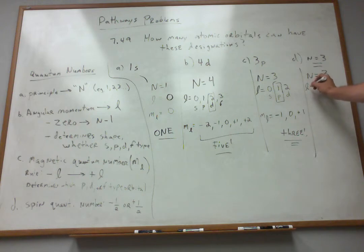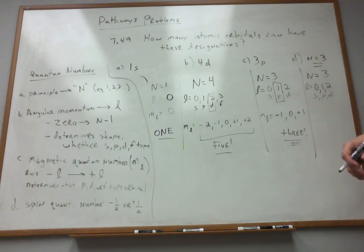So what about l in this case, then? Well, let's see. That could probably take on several different values. Again, the rule is that we start at 0. We go to integer values, like 1, 2, so on, and so forth. And we keep going until we get to n minus 1. n is 3, minus 1 is 2. So I stop at 2. Again, that corresponds to the s, the p, and the d-type orbitals that we've been considering here now.